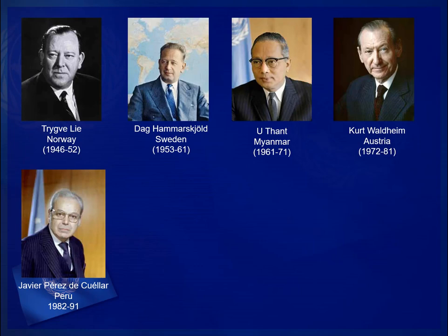Peru's Javier Pérez de Cuéllar was then elected. Prior to his election, he had a distinguished career as a Foreign Service Officer, including stints as Peru's representative to the Security Council, Ambassador to France, and Special Representative of the Secretary General in Cyprus. He led negotiations between Argentina and the United Kingdom after the Falkland Islands crisis in 1982, facilitated Namibia's independence in 1990, and worked to address the situations in Western Sahara and the former Yugoslavia.